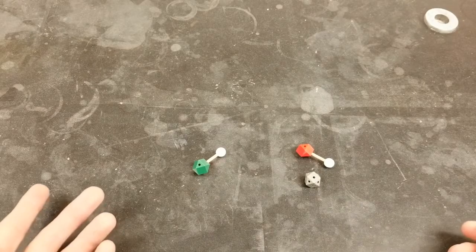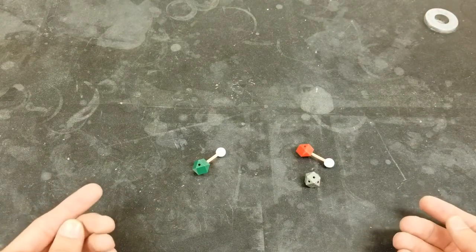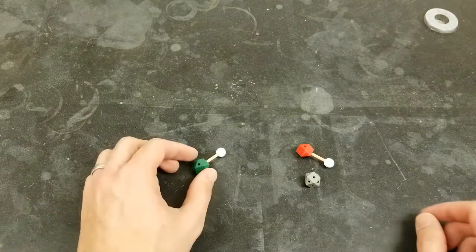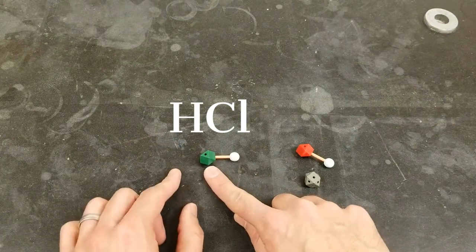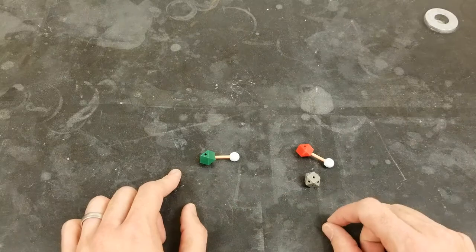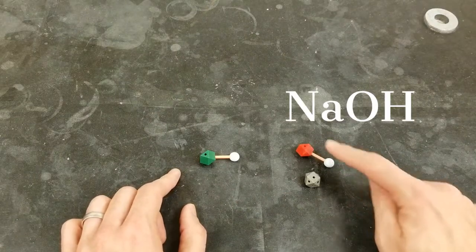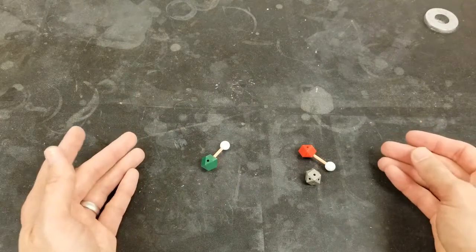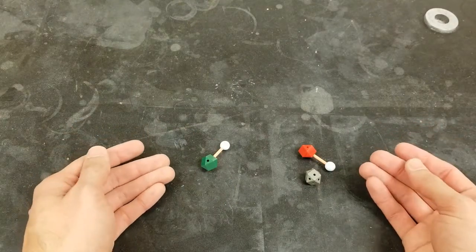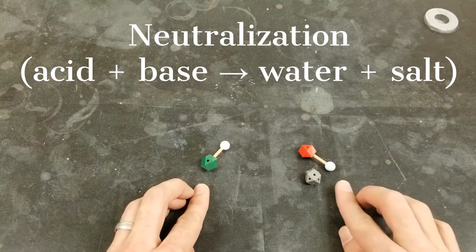In this reaction, we're going to have two substances that are reacting with each other. We've got hydrochloric acid with an H and a Cl. We've got sodium hydroxide, NaOH. These are both going to be dissolved in water, but they're going to be reacting with each other. And this is a neutralization where an acid reacts with a base.